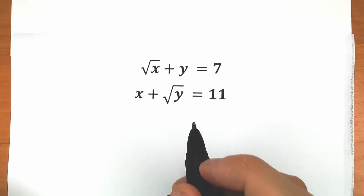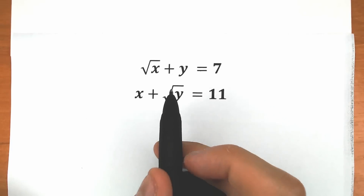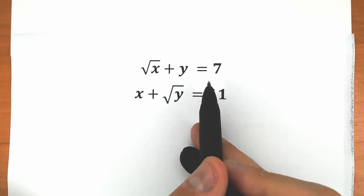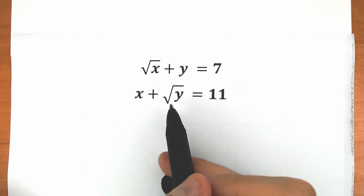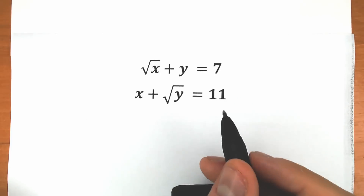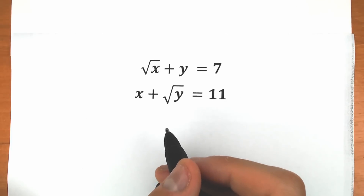Hello everyone, happy to see you here. Today we have a really interesting challenge: square root of x plus y equals 7, and x plus square root of y equals 11. Let's solve this interesting question.